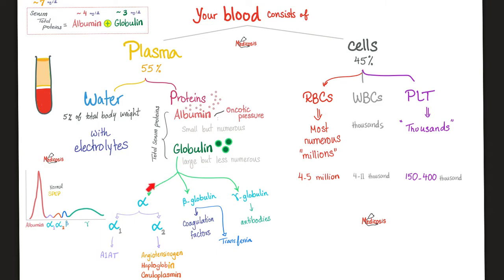Globulins have many types: alpha globulin, divided into alpha-1 and alpha-2, beta globulins, and gamma globulins. The most important alpha-1 globulin is alpha-1 antitrypsin — studied in pulmonology, covered in my emphysema video. Alpha-2 globulins include angiotensinogen, which is converted to angiotensin 1 by renin from the kidney, then to angiotensin 2, which constricts vessels and releases aldosterone from the adrenal cortex. We also have haptoglobin and ceruloplasmin as alpha-2 globulins.